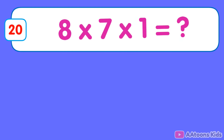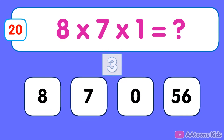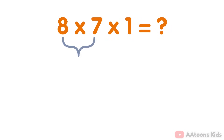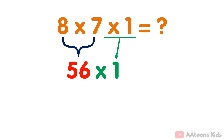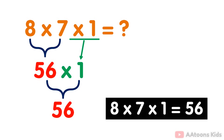8 multiplied by 7 multiplied by 1. The answer is 56. Simply multiply the numbers 8 and 7 which equals 56. Then you multiply the result 56 by 1. You will get 56. Therefore, the answer to 8 multiplied by 7 multiplied by 1 is 56.